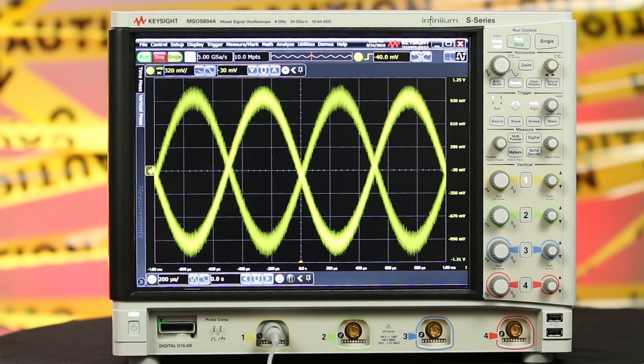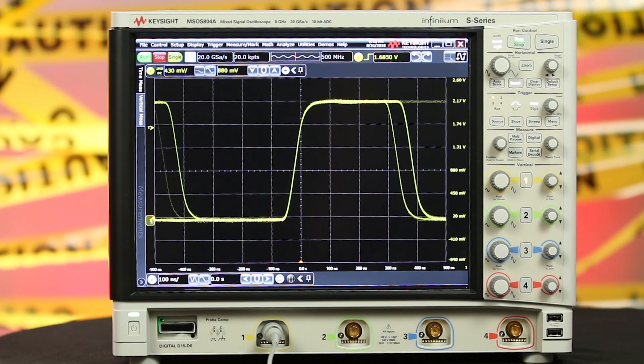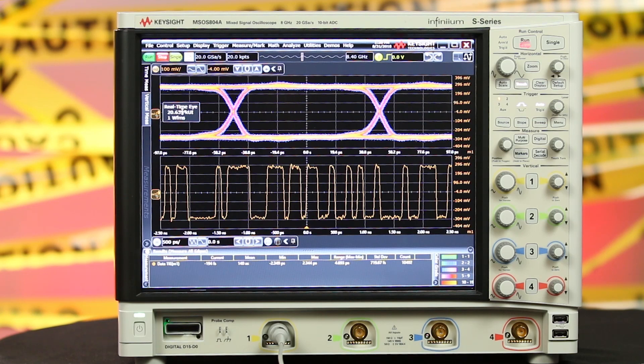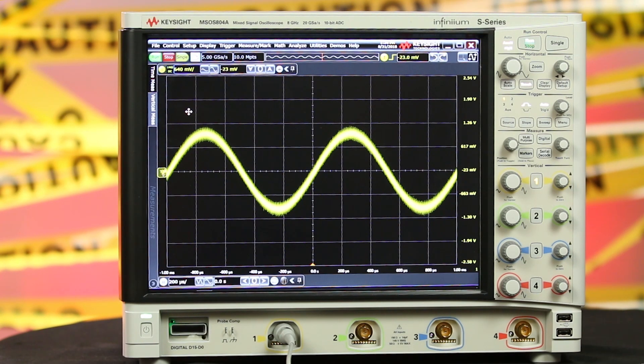Vertical noise is often overlooked, but it can cause significant problems like amplitude measurement errors, waveform reconstruction uncertainty, timing errors and jitter, and undesirably fat waveforms.